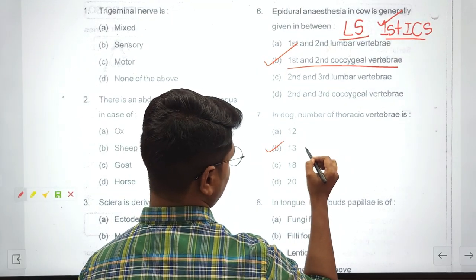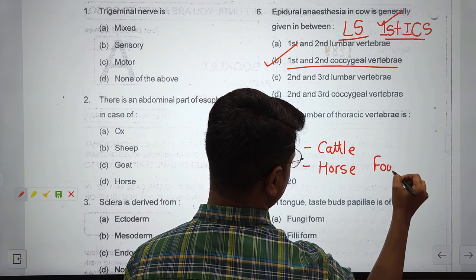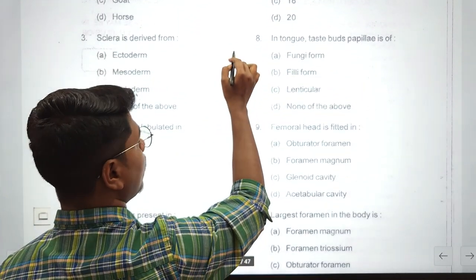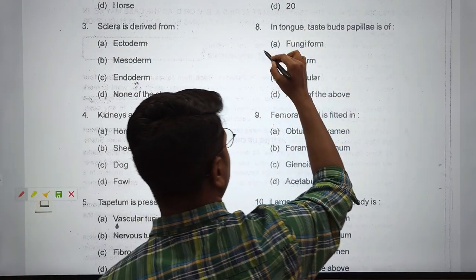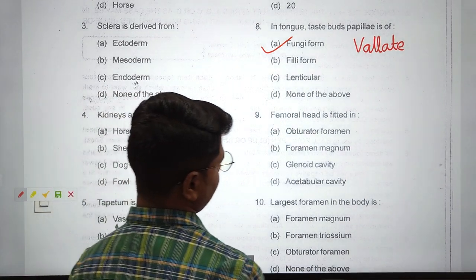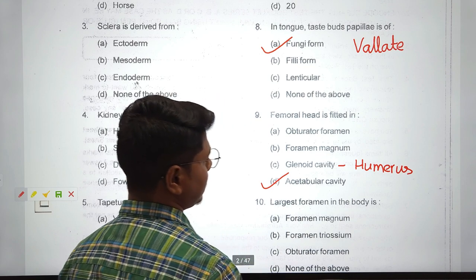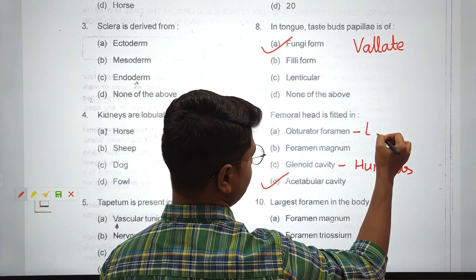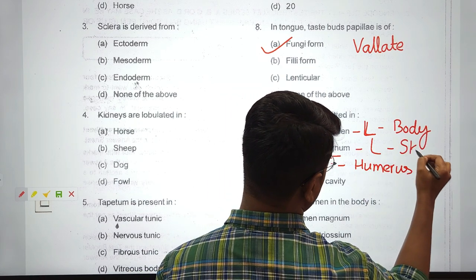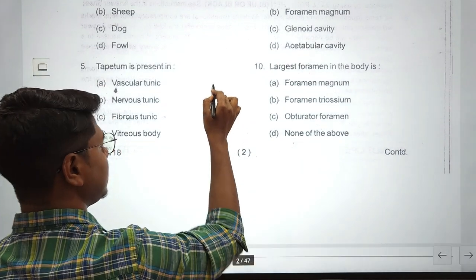In dog, number of thoracic vertebrae is 13, also in cattle. In horse it is 18, in fowl it is 7. Next question: in tongue, test bud papilla is fungiform. Answer is fungiform. There is also another test word - vallate papillae. Femoral head is fitted in acetabular cavity. In glenoid cavity you will find humerus joining at the glenoid cavity. Obturator foramen is found in os coxae. This is the largest foramen of the body. Foramen magnum is largest in skull.